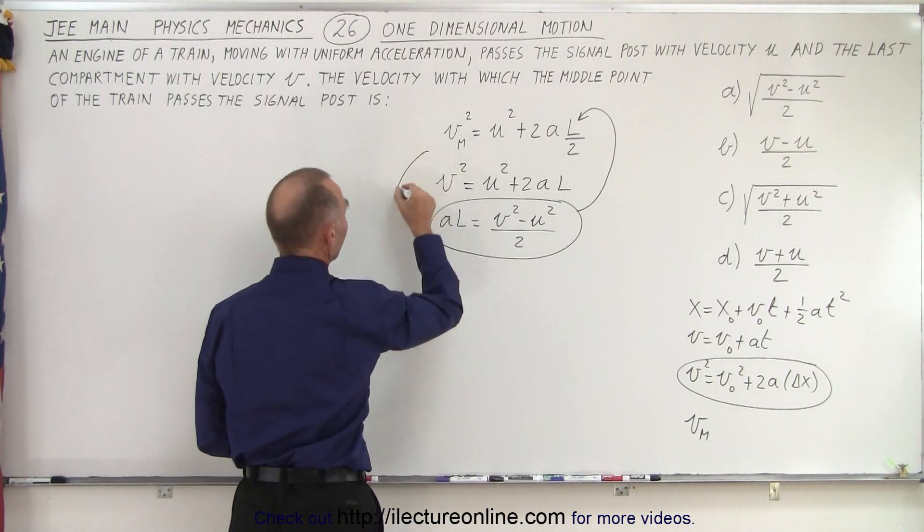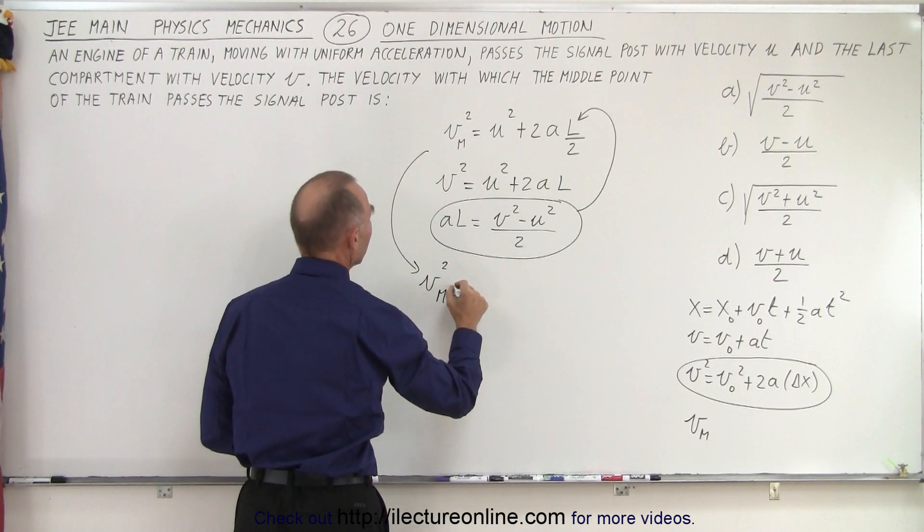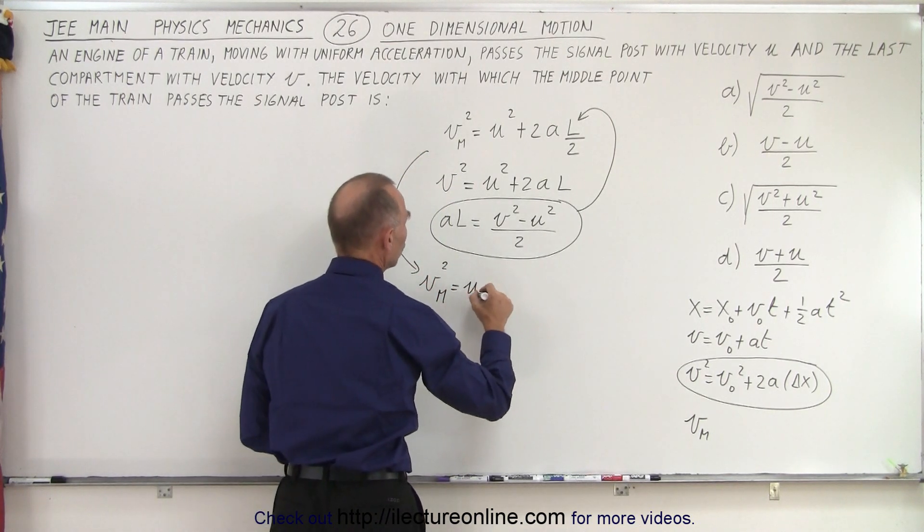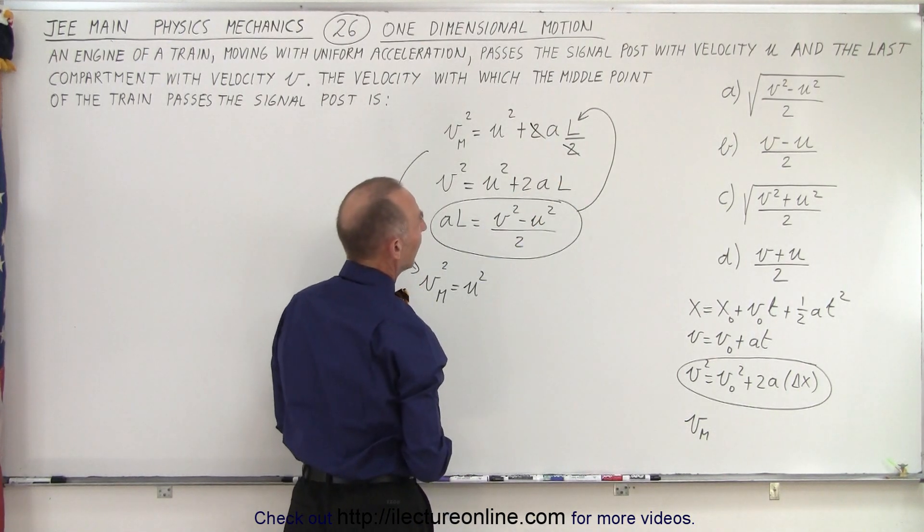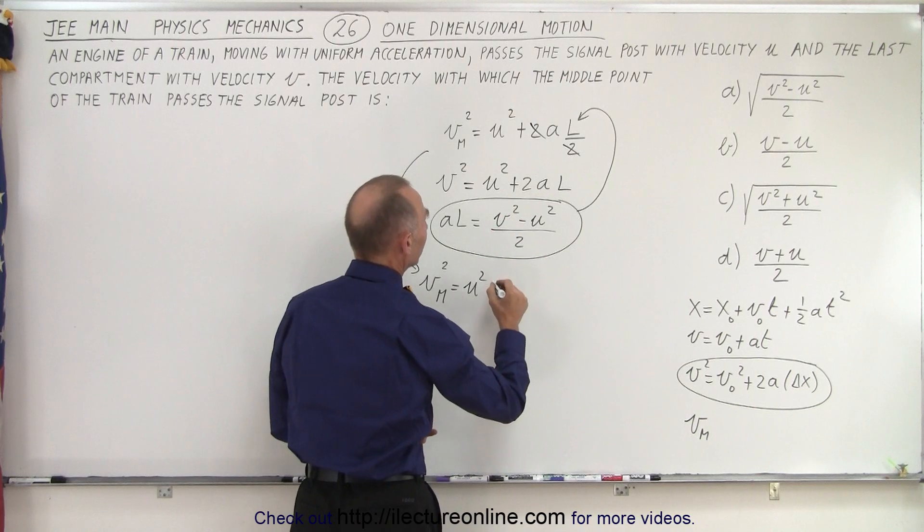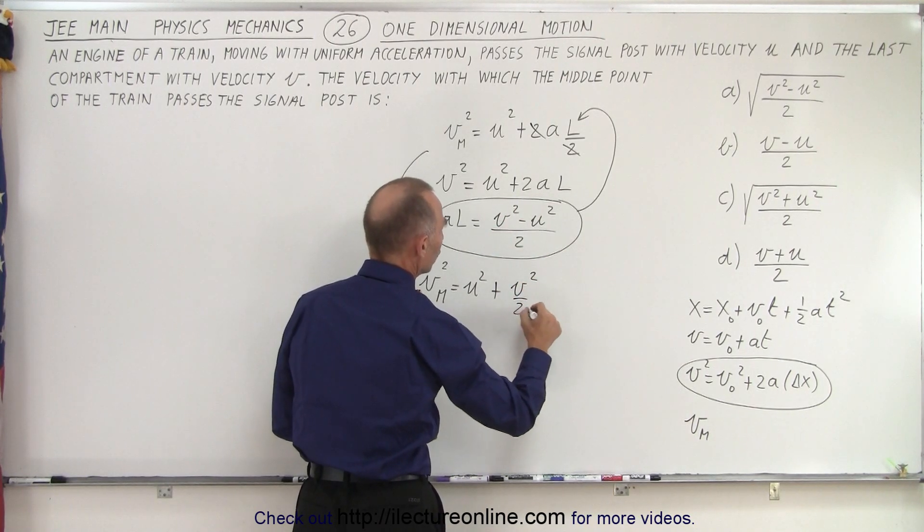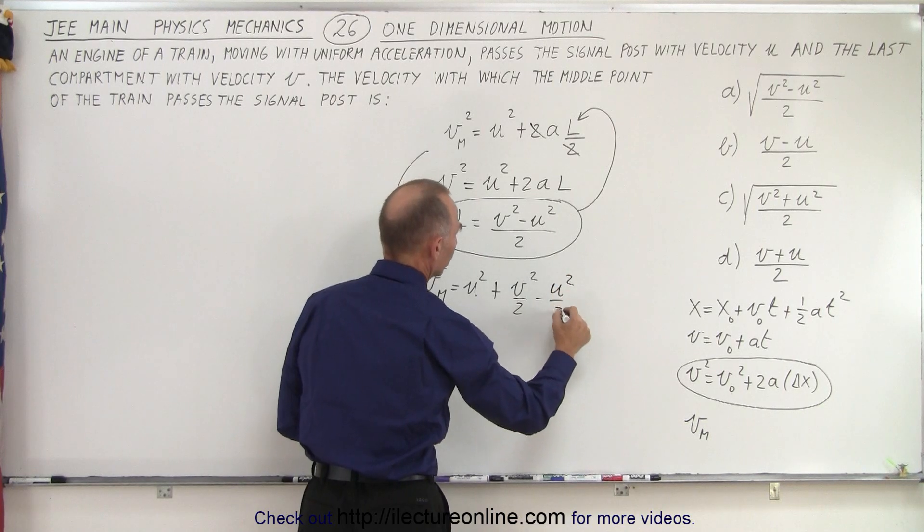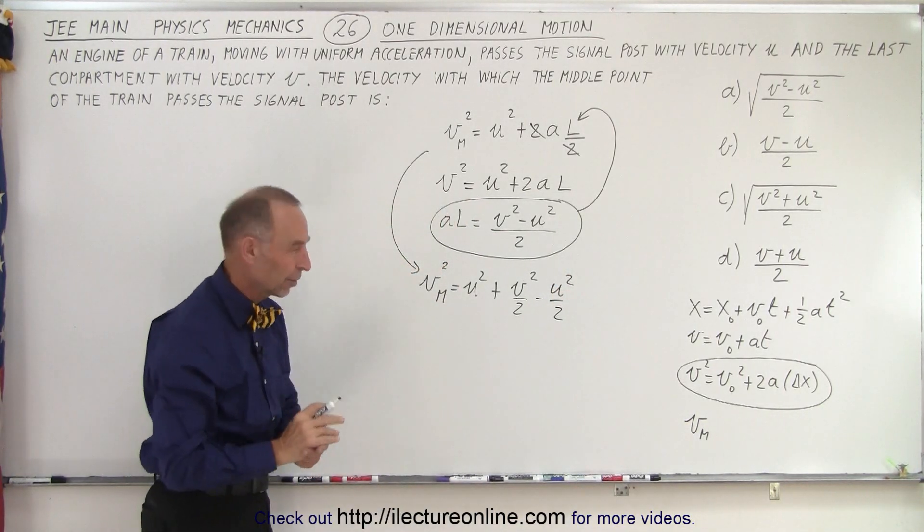So now what we can do is the following. We can say that velocity squared in the middle of the train is equal to u squared and the two's cancel out like this. And a times l can be written as v squared over two minus u squared over two. And now all I have to do is simplify that to find the velocity of the middle of the train.